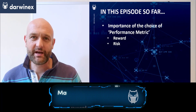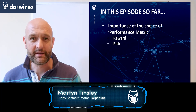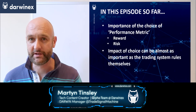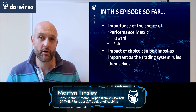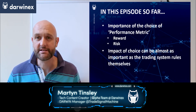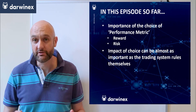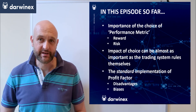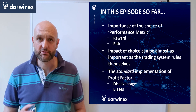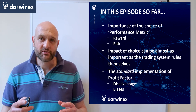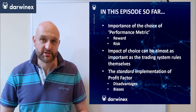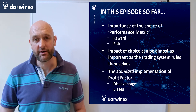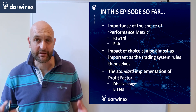Welcome back. In parts 9.1 and 9.2 we looked at the importance of choosing a good performance metric, because of the important role that plays in the selection of parameters we'll use for live trading. We also looked at one performance metric in particular — profit factor — and some of the disadvantages of using it, because of the biases introduced as part of that calculation.